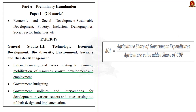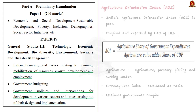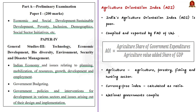India's Agricultural Orientation Index or AOI is poor. Let me tell you what this Agriculture Orientation Index is and how important this indicator is with respect to the achievement of Sustainable Development Goal 2.